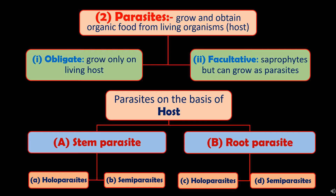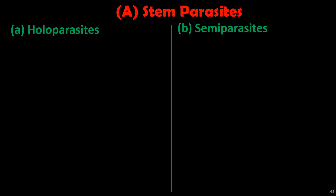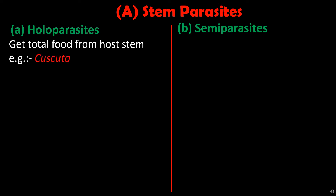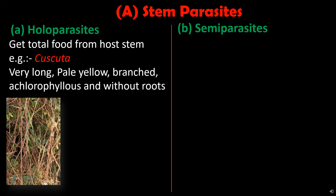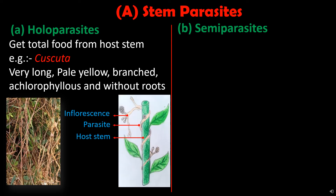Stem parasites and root parasites are further categorized as holoparasites and semi-parasites. Holoparasites are plants which get their total food — organic food, water and minerals — from the host stem. Example is Cuscuta. Cuscuta plants are very long, pale yellow, branched, achlorophyllous and without roots. Seeds of Cuscuta germinate in the soil, grow in size, and undergo rotatory movement, coiling around the host stem. If the host stem is not available, the young plant dies.